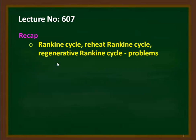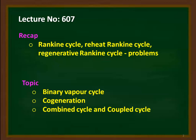We recap from the previous lectures. In the previous 6 lectures, we studied about the Rankine cycle, reheat Rankine cycle, and regenerative Rankine cycle. We also solved problems from the Rankine cycle, reheat cycle, and the regenerative cycle from the Anna University question paper. The topics for this lecture are binary vapor cycle, cogeneration, combined cycle, and coupled cycle.